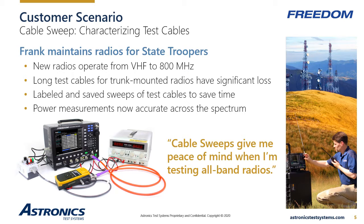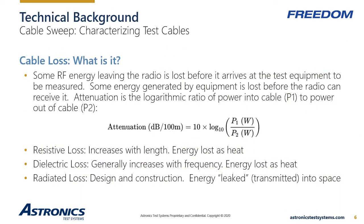What is cable loss and how big of an impact does it have on power measurements? Cable loss is a general term that encompasses all of the sources of RF energy lost between a device that generates a radio signal and a device that receives, measures, or radiates that signal. The measurement of cable loss is attenuation, which is expressed in decibels. It is a logarithmic ratio of the power into the transmission line versus the power out of the transmission line.